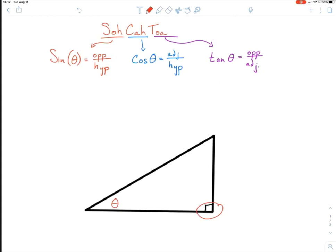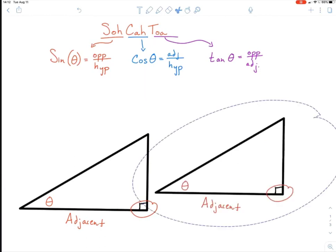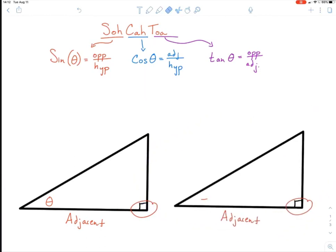But let's say instead, if my triangle, if I was using the angle up here as my angle theta, then this side would be my adjacent side of the triangle.